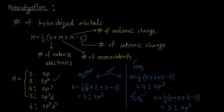Now let's look at CO₂. Carbon is again the central atom. v = 4 (valence electrons of carbon), m = 0 (oxygen is divalent), a = 0, c = 0. So H = ½(4 + 0) = ½ × 4 = 2. Two hybridized orbitals means the hybridization in CO₂ is SP.